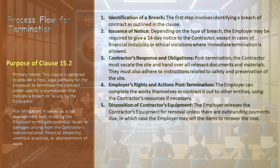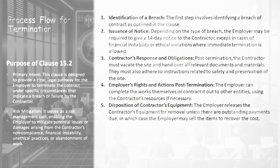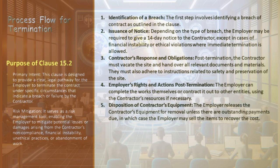The process begins with the identification of a breach of contract. This breach must fall under the specific criteria outlined in Clause 15.2, such as non-compliance with performance security, project abandonment, unauthorized actions, financial instability, or ethical violations. Once a breach is identified, the employer issues a notice to the contractor. In general, a 14-day notice is required. However, in cases involving financial instability or ethical violations, the employer is permitted to terminate the contract immediately without the standard notice period.